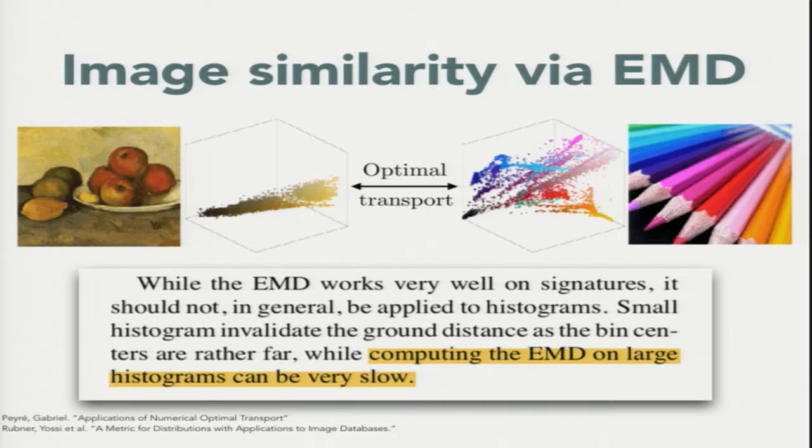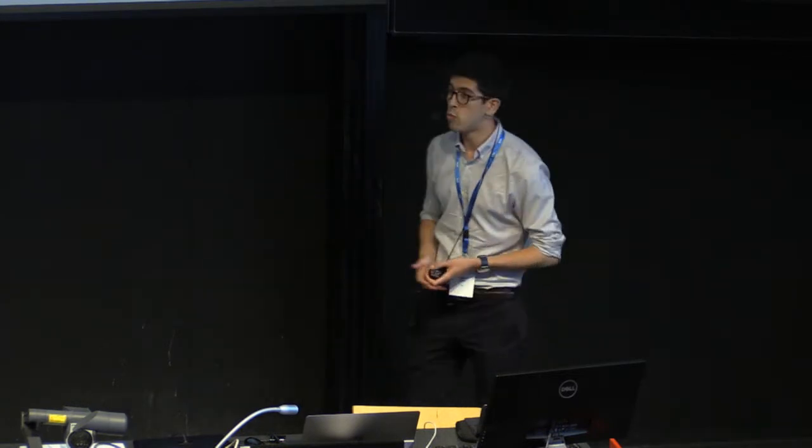Because at the time, computing the Earth Mover Distance on full histograms was simply too slow. And these were with relatively small images and relatively simple settings. And so this meant it was a huge bottleneck for the use of this procedure as a primitive in a whole bunch of image processing applications.